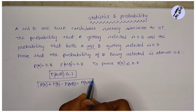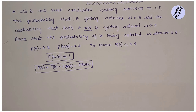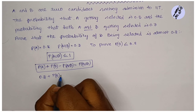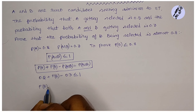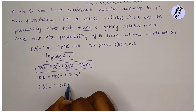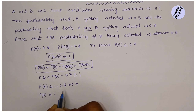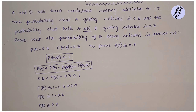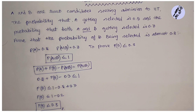Using the addition formula, substituting the values: P(A) = 0.5, P(A∩B) = 0.3, and P(A∪B) ≤ 1. So P(B) ≤ 1 - 0.5 + 0.3, which gives P(B) ≤ 1 - 0.2, therefore probability of B is less than or equal to 0.8. Thank you for watching.